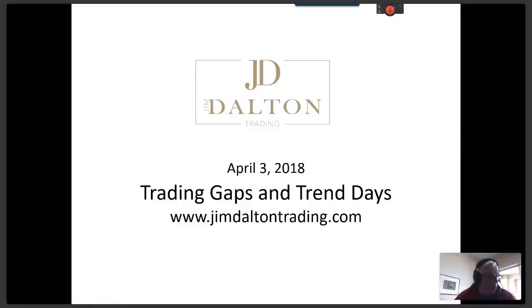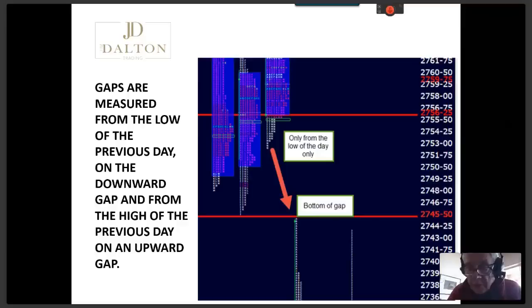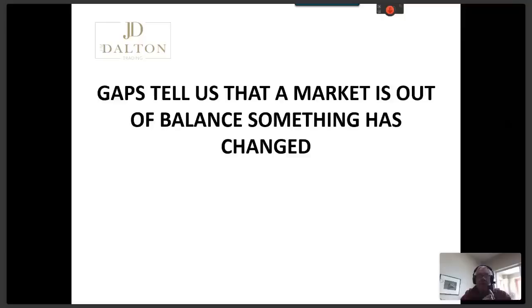We had a difficult time deciding what day to have this because we wanted to know when we were going to have a trend day — so we got it right. First of all, to make clear what I mean by gaps: gaps are only measured from the low of the previous day on a downward gap, and from the high of the previous day on an upward gap. I'm only looking when the gap tells me I'm totally out of range relative to the previous day — it has nothing to do with where the settle was. When measured this way, gaps tell us that a market is out of balance; something has changed.